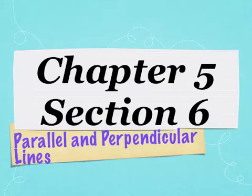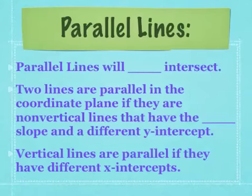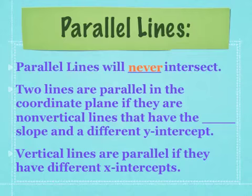Section 6: Parallel and Perpendicular Lines. Parallel lines will never intercept. Two lines are parallel in the coordinate plane if they are non-vertical lines that have the same slope and a different y-intercept. Vertical lines are parallel if they have different x-intercepts.